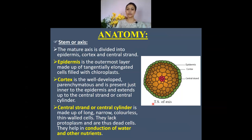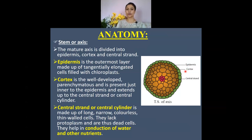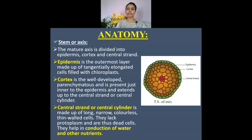Now let us look at the anatomy of Funeria. This is a cross-section through the stem or axis, and the anatomical structure is very simple. When the mature axis is cut, three distinct regions are visible: the outermost layer is the epidermis, the middle layer is the cortex, and the innermost conducting region is called the central strand.